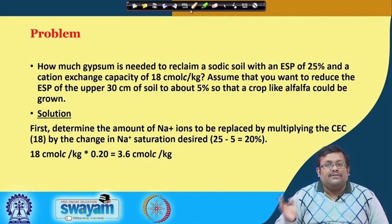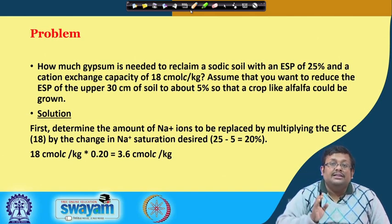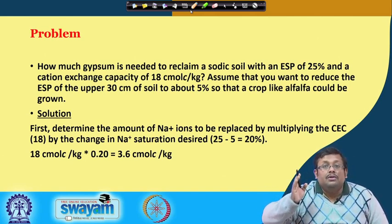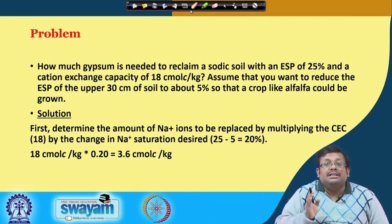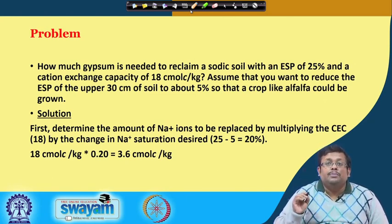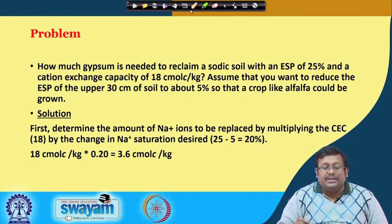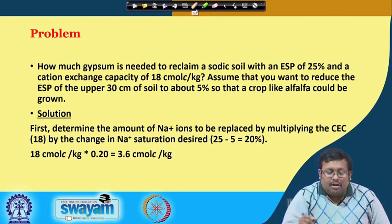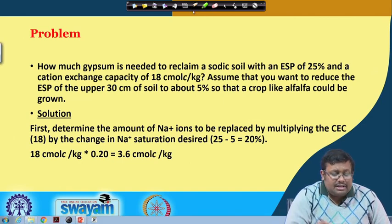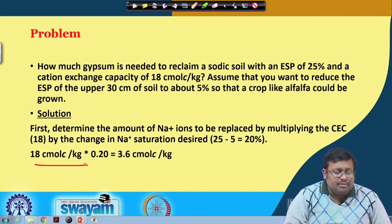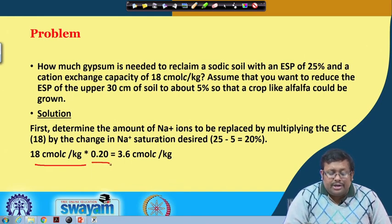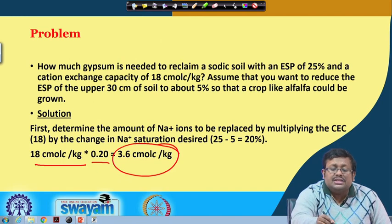Our initial sodium saturation was 25% and we want it reduced to 5%, so the reduction is 20%. Multiplying 18 cmol charge/kg by 0.20 gives 3.6 cmol charge/kg of sodium to be replaced. This is the first step.